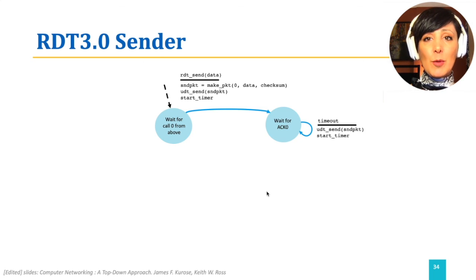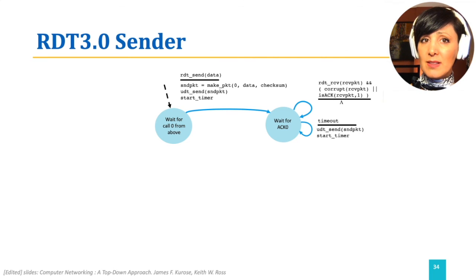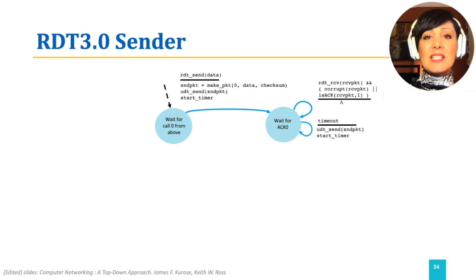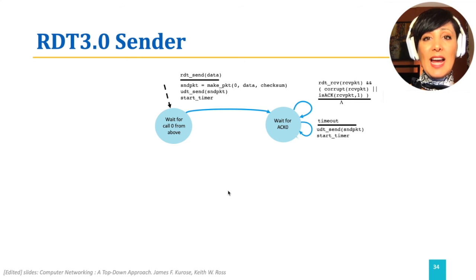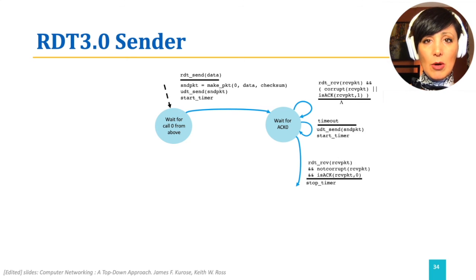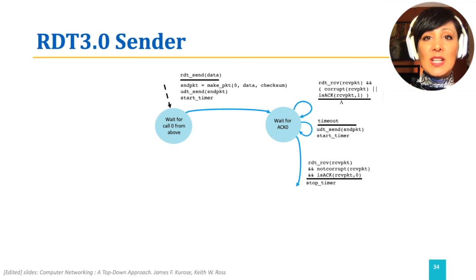While waiting for the ACK for packet 0, if an ACK is received and it is corrupt or has sequence number 1, it will be discarded. This process will repeat until there is a correct acknowledgement with expected ACK number 0, which will cause the transition to the next state and stopping the timer.